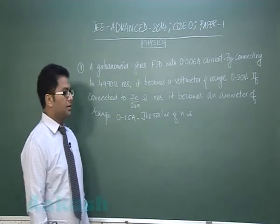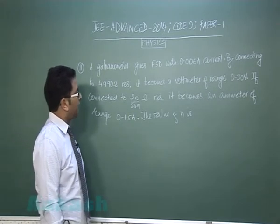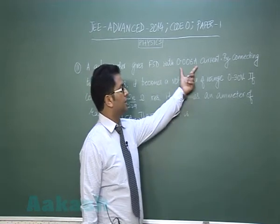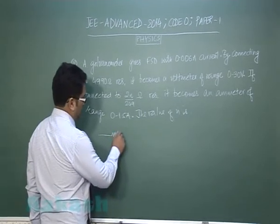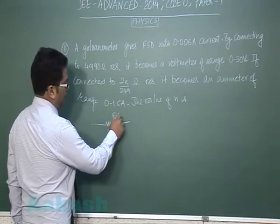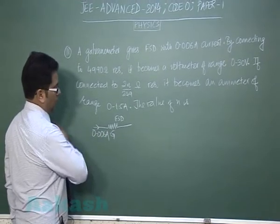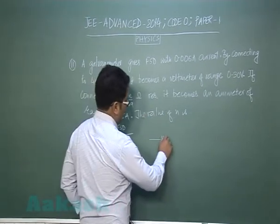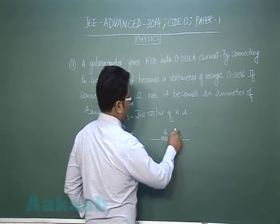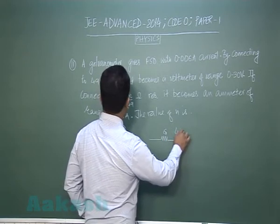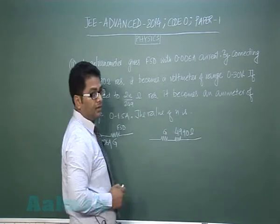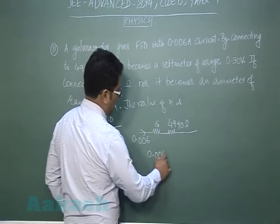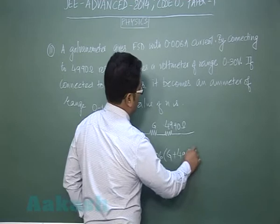Alright with question number 11 now we go to section 2 and it has integer type questions. So let us say question number 11, a galvanometer gives full scale deflection with this many ampere current so that means the galvanometer resistance G is at full scale deflection if we supply current this much. By connecting it to 4990 it becomes a voltmeter that means the same galvanometer with a resistance 4990 ohm now it becomes a voltmeter of range 30 volt so that means the current at that situation is this much so I will get 0.006 into G plus 4990 is 30 volt.